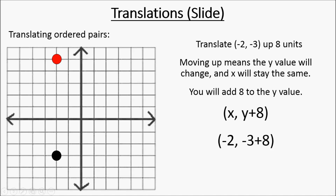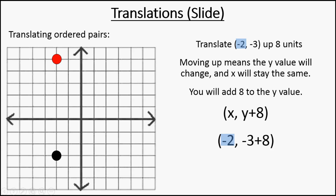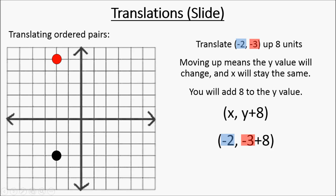We plug in our original numbers. We have negative two, which is going to stay the same — that's the x. And then we have negative three plus eight. We're adding eight to the negative three because we're moving up. The new location is negative two, five. And if you look at the picture, that red dot is at the location of negative two, five.